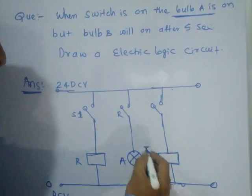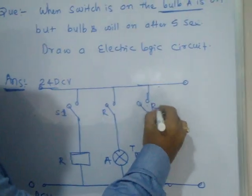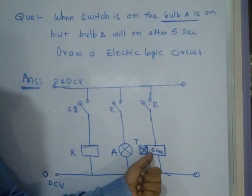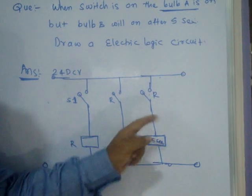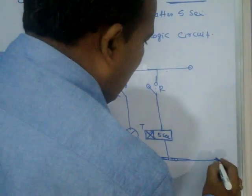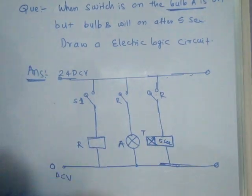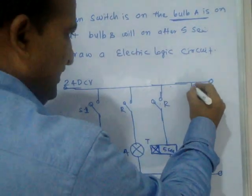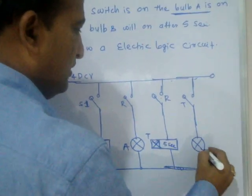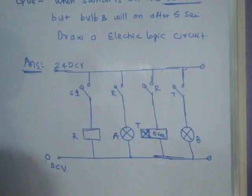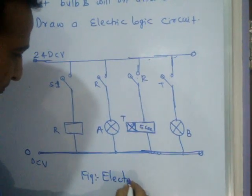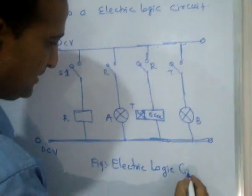When R closes, the timer starts. You will get the output of the timer after 5 seconds, because it is an on-delay timer. The preset time may be 10 seconds, 20 seconds — whatever you set. When the timer is on, T closes after 5 seconds, and then bulb B turns on. This is called an electric logic circuit.